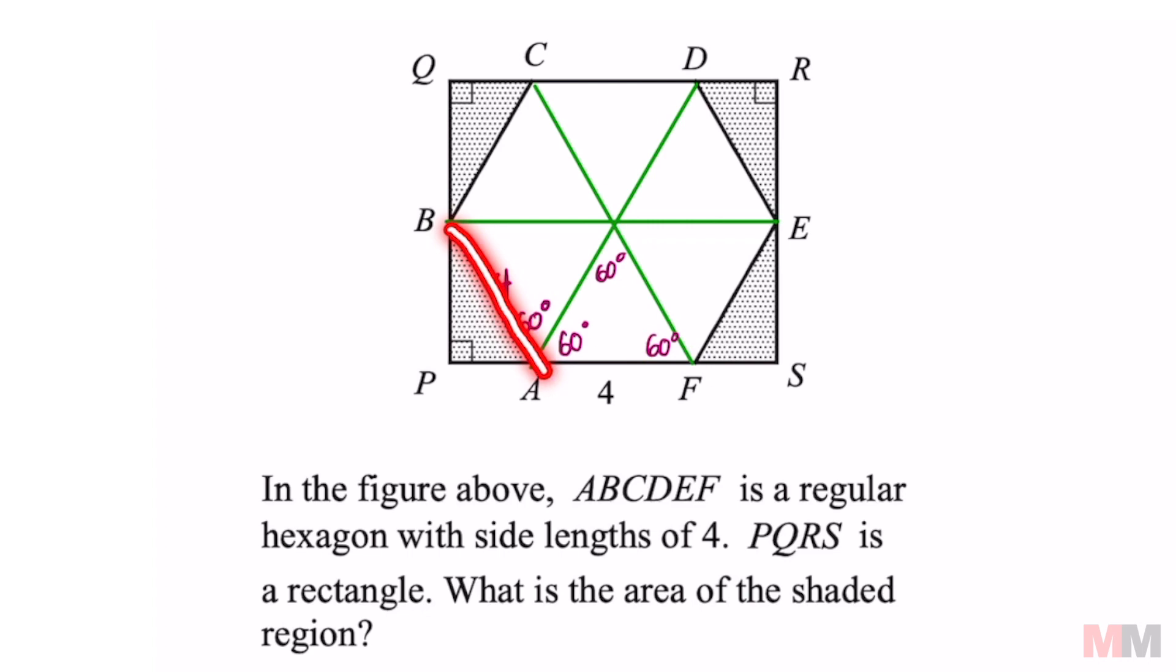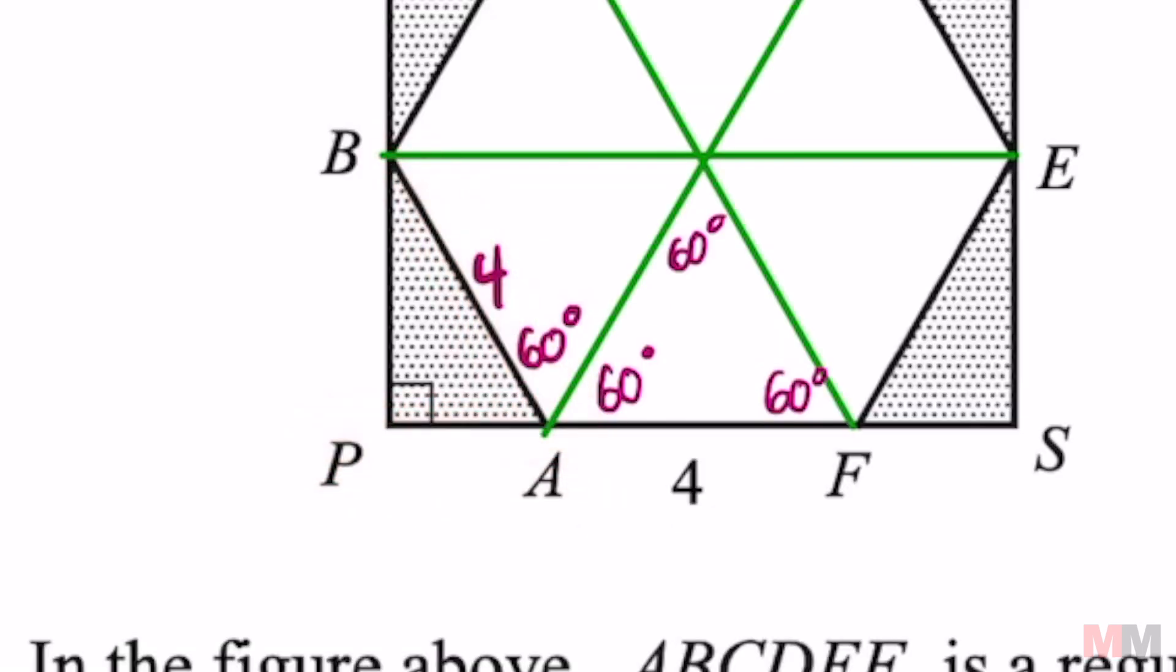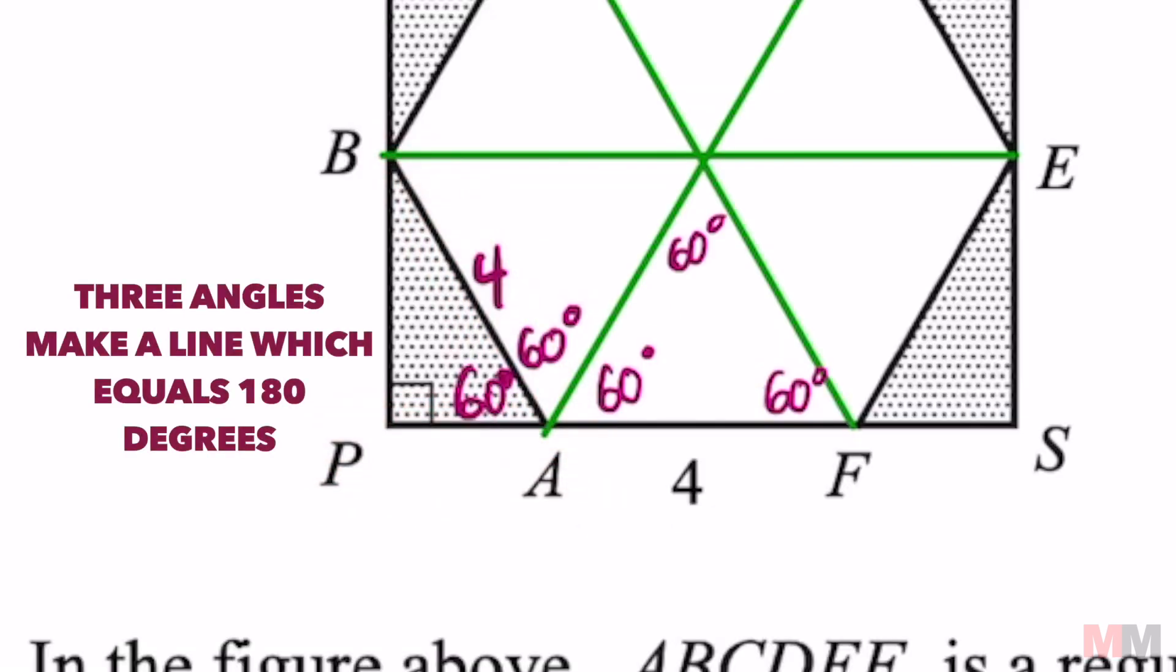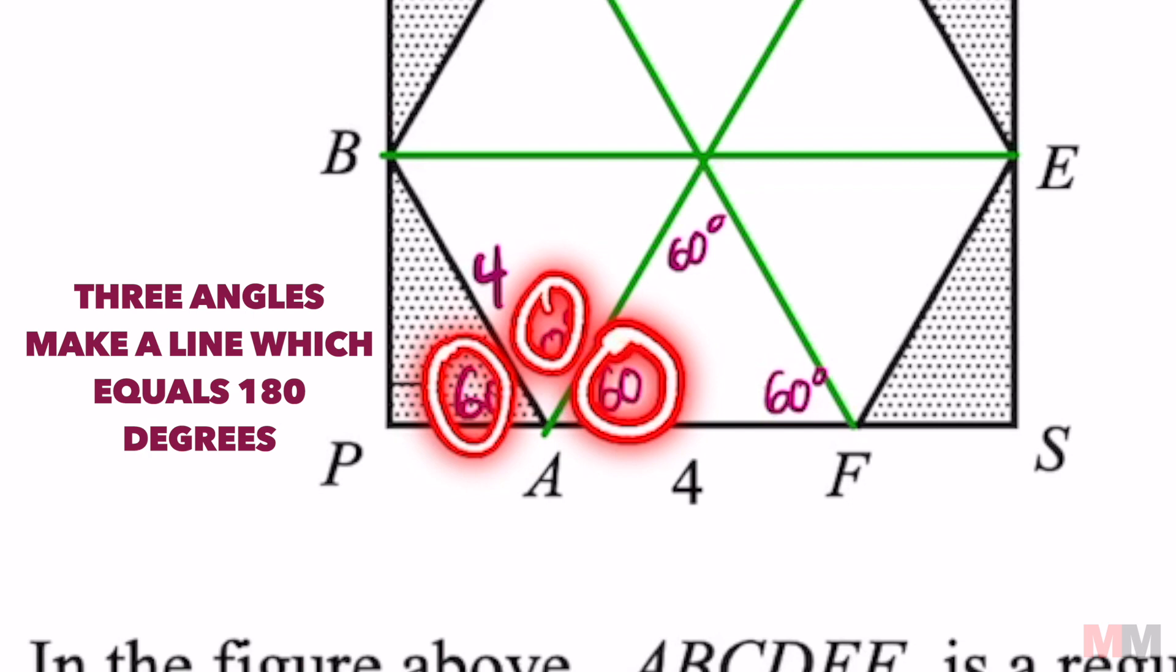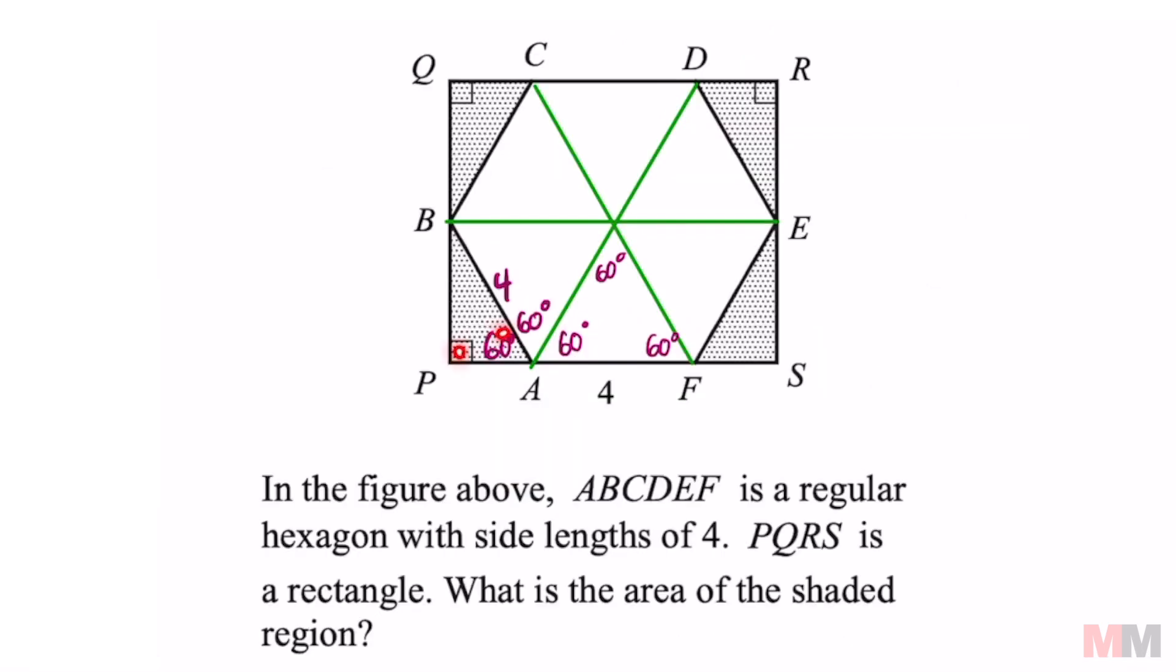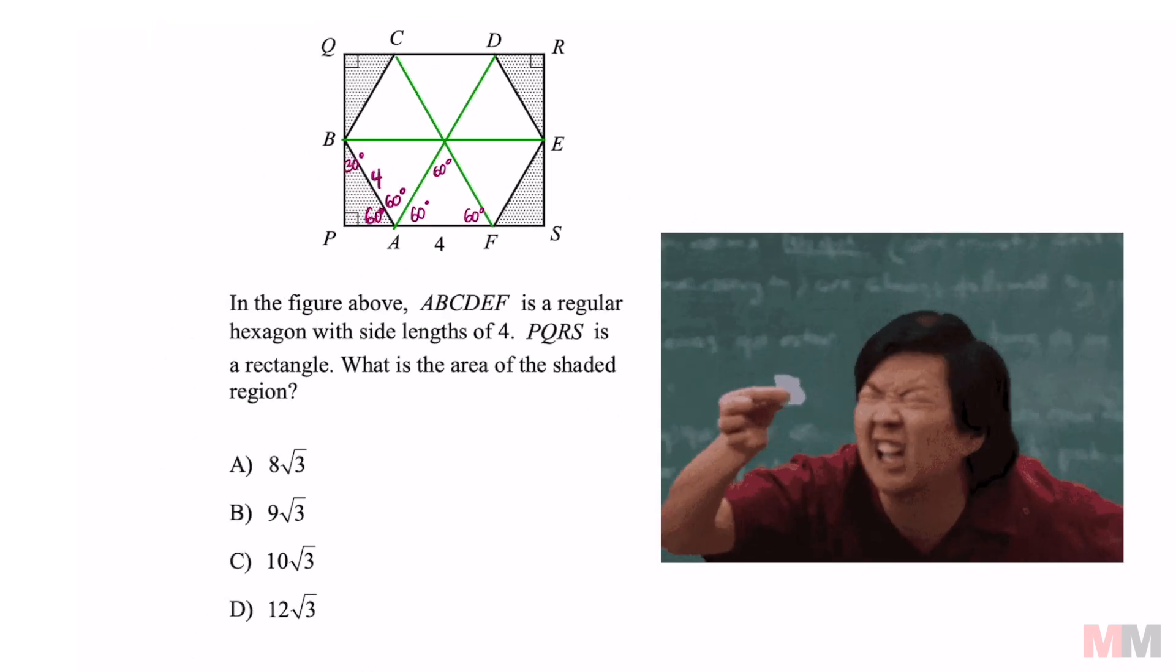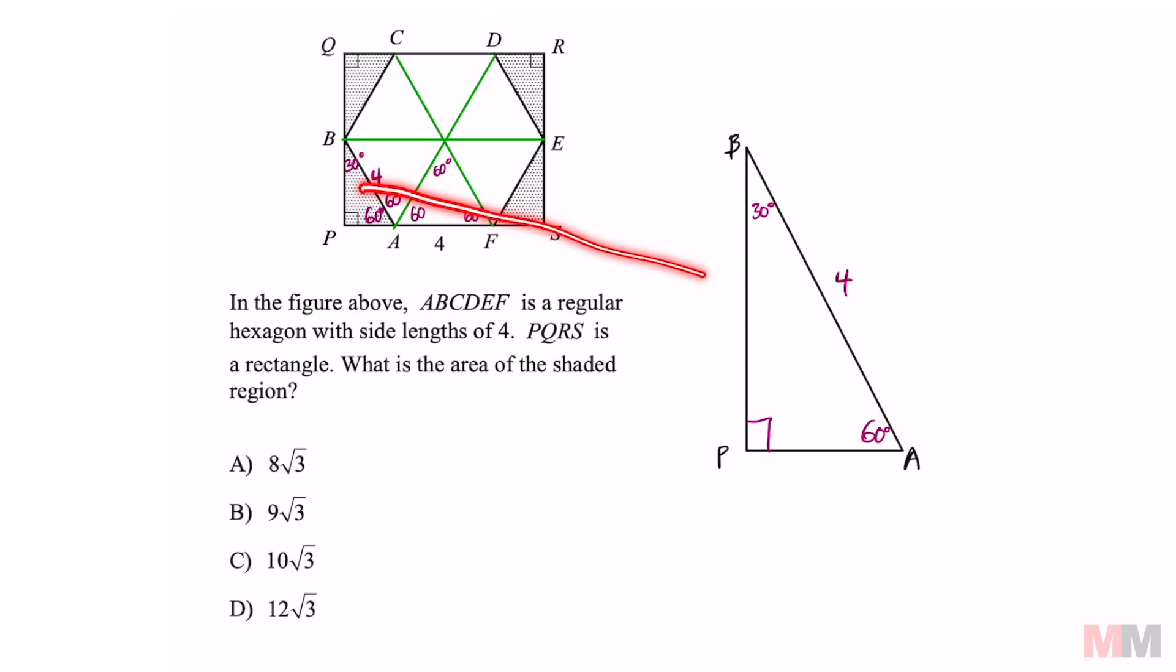And angle BAP is also going to be 60 because these three angles right here add up to 180 degrees. If this is 90 and that is 60, that would mean that angle PBA is going to be 30 degrees. And let me just redraw that because it's all jumbled up in there. That is the same as that triangle, but you don't got to squint your eyes now.